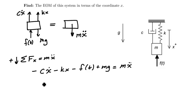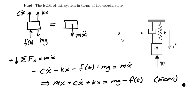I can then write this in a somewhat more standard form by moving the terms multiplying x to the same side as the inertia term. And if I do that, I'll have m x double dot plus c x dot plus kx is equal to mg minus f(t). And this will be the equation of motion for this system in terms of the dynamic variable x. Take care.